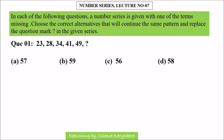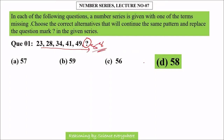Now let's start the lecture. In question number 1, a number series is given with one term missing. You have to choose the right alternative that will continue the same pattern and replace the question mark. Looking at the options, option D — that is 58 — is the correct answer. Let us see how we got 58.